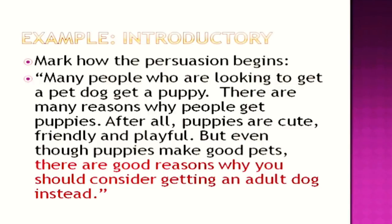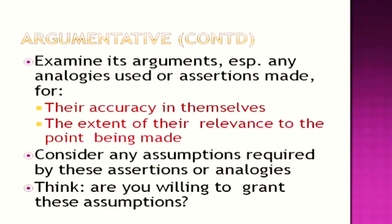Let's begin with an example of how the author can begin directly with persuasion. I am reading out this passage: 'Many people who are looking to get a pet dog get a puppy. There are many reasons why people get puppies. After all, puppies are cute, friendly, and playful. But even though puppies make good pets, there are good reasons why you should consider getting an adult dog instead.' Mark the lines — how this author is persuading, how he is shifting the stance. He begins with talking about a puppy and gradually starts persuading dog lovers to settle with an adult dog.